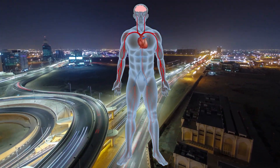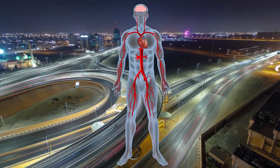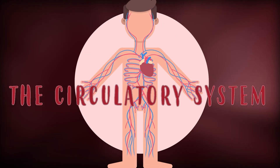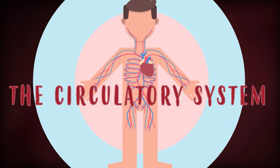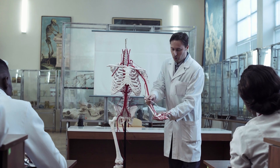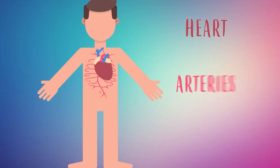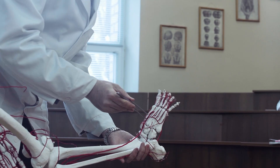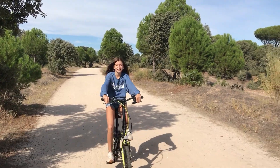Hello friends, welcome to a new Happy Learning video. Today we're going to learn about the circulatory system of the human body. The main function of the circulatory system is to carry nutrients to the cells of our body through the blood. It is formed by the heart, arteries, and veins, and its proper functioning is essential for good health.